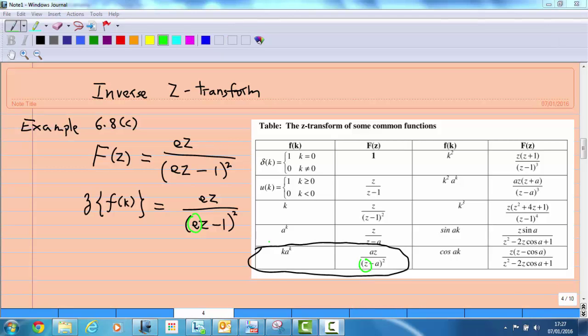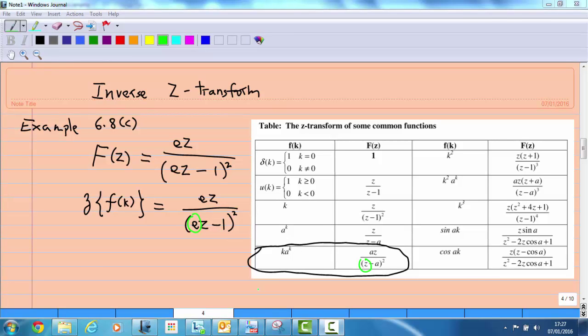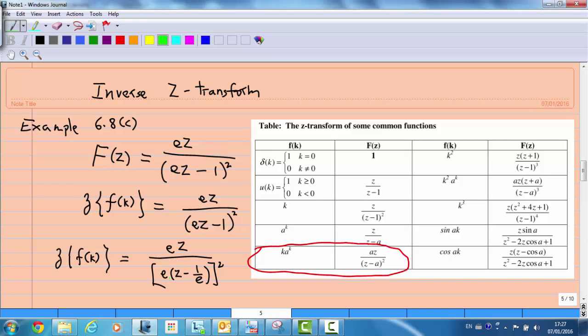First, we know that ez - 1 can be factorized as e times (z - 1/e), then squared.